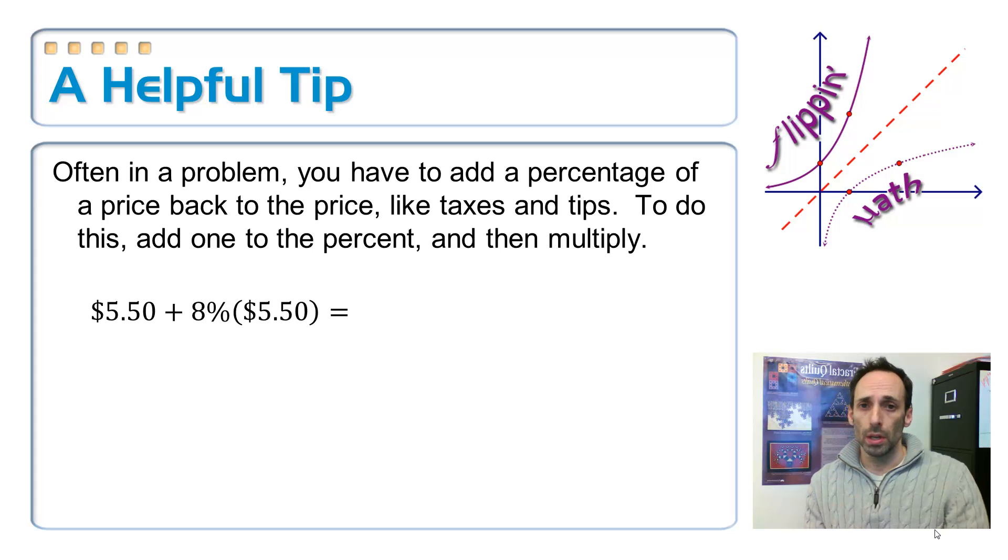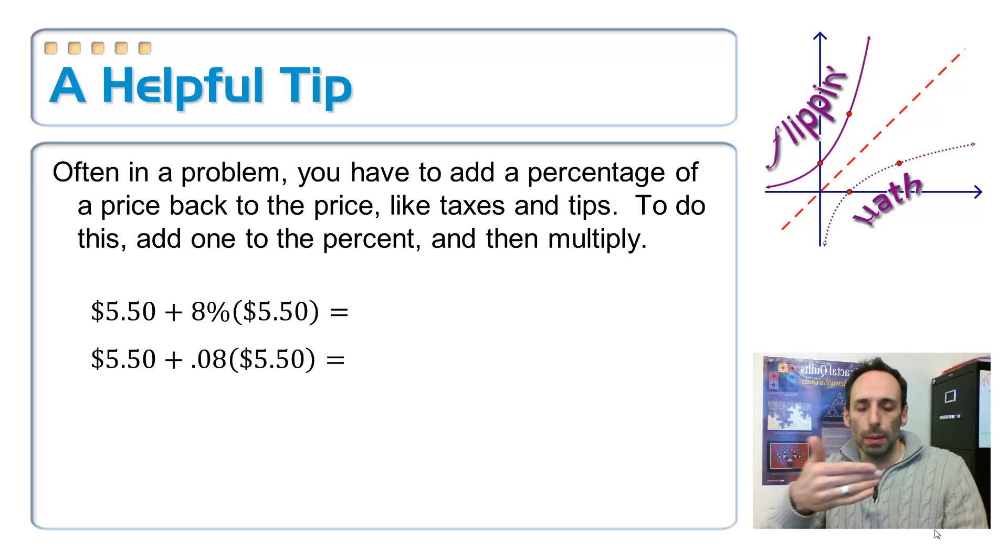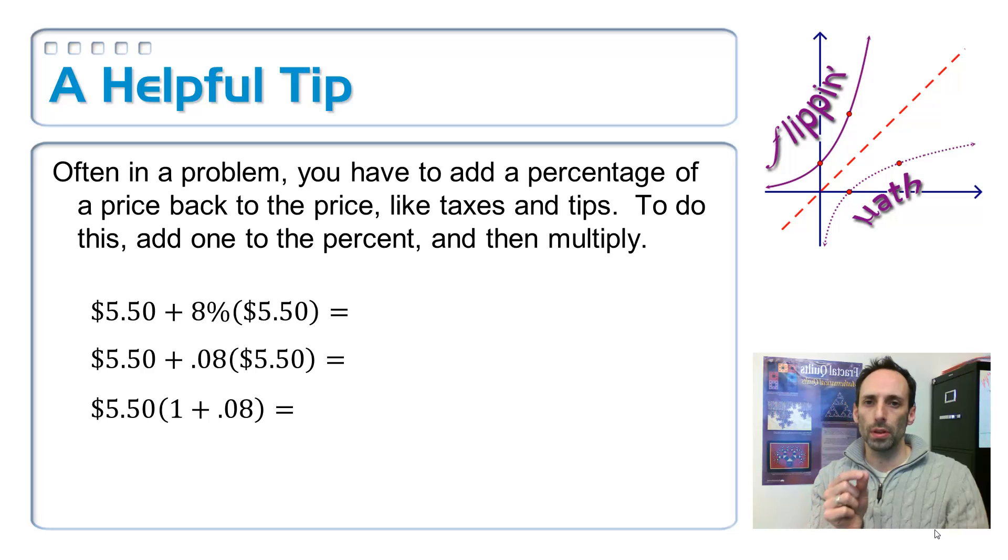Let's do some algebra on that and simplify it. I had to take the percent and write it as a decimal, moving the decimal place over two places. Notice that they both have a factor of 5.50. You wouldn't ordinarily do it, you just type it in the calculator, but this is going to be useful. I'm going to factor that out. So when I factor it out, I'm left with 1 plus 0.08 in the parentheses. So you have 5.50, which is the original price, times 1.08. Basically, it's 108% of your price. So what that does is it takes the price, calculates the tip, and adds it back in all at the same time.